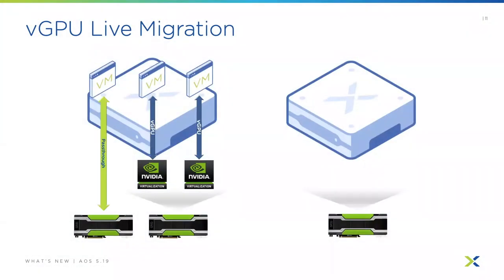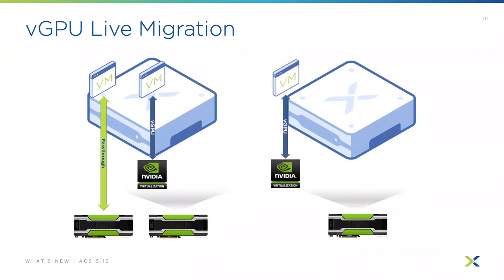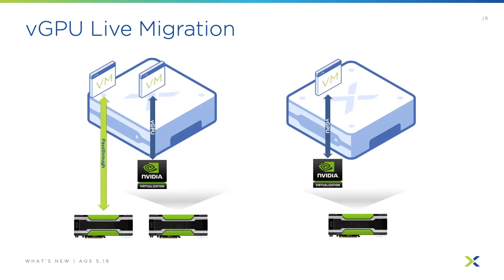Now let's look at AHV enhancements. First, vGPU live migration. We support virtual GPUs — you can pass through a GPU directly using NVIDIA GRID to virtual machines running on AHV. Previously, you could not live migrate them; you had to power them down, migrate, and start them up on a new node. Now you have the ability to live migrate a virtual machine with the vGPU attached, enabling less downtime for your business-critical applications.